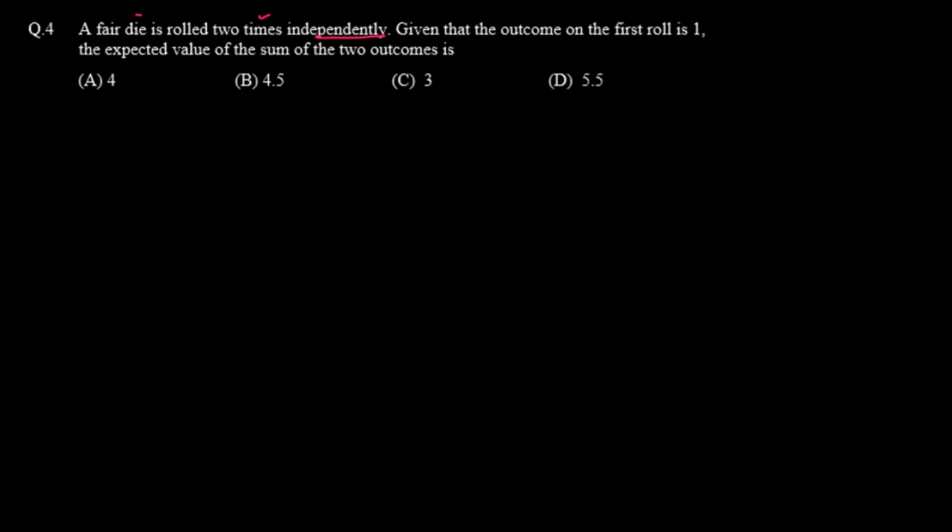Question four says: a fair die is rolled two times independently. So we are rolling a die two times, and both outcomes are independent of each other. Given that the outcome on the first roll is one, the expected value of the sum of the two outcomes is what we need to find.